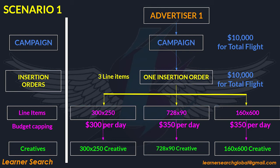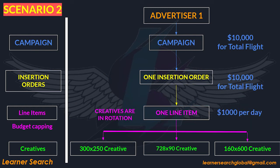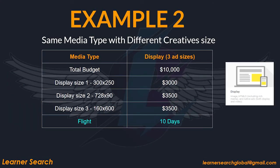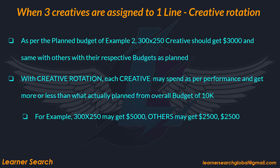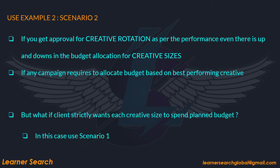Now let's look at the second case. Instead of creating a separate line for each creative size, we will create a single line item for all 3 creatives and assign them to this line item. As per the planned budget, the 300x250 creative should get $3,000, with others receiving their respective planned budgets. With creative rotation, each creative may spend according to performance and receive more or less budget from the overall $10k budget. For example, the medium rectangle may receive $5,000 while the others receive $2,500 each. You can use this scenario if you get approval for creative rotation based on performance, even though budget allotment for creative sizes fluctuates. This campaign structure may be used for any campaign that requires budget distribution based on the highest performing creative.